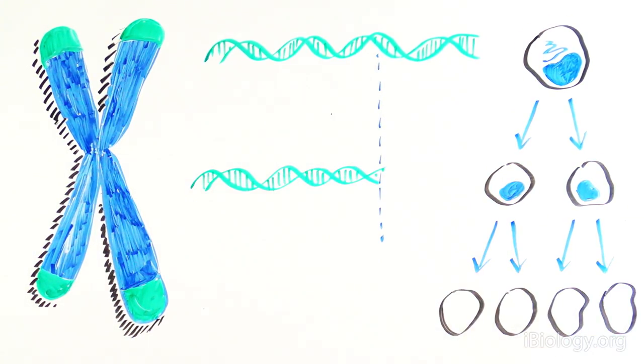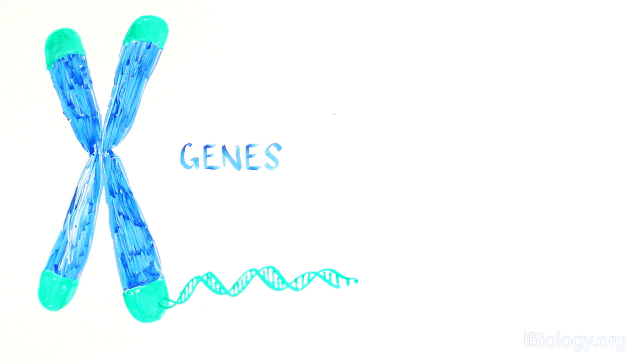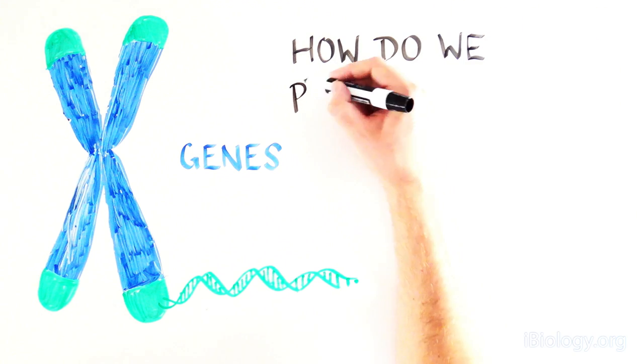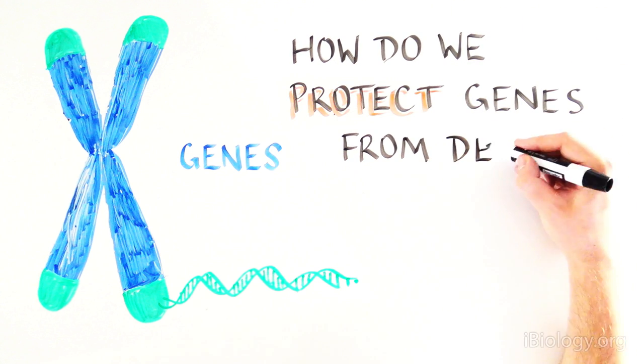So after multiple cell divisions, the chromosomes get shorter and shorter. This poses one of the biggest conundrums in biology. As cells divide, how do we safeguard all of the information encoded in our DNA that is so important to our survival? How are genes protected from deletion at the chromosome end?